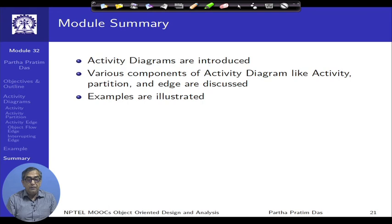To summarize, in this module we have introduced the activity diagram — the first of a three-part discussion. We have covered the basic components: activities, partitions, and edges, including object flow and interaction edges. We have explained these through illustrative examples which will continue in the next modules.